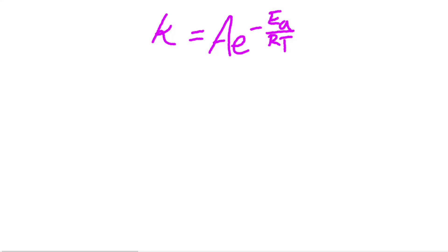The Arrhenius equation in IB higher-level chemistry can be a difficult one to understand intuitively. It's at the center of IB higher-level chemistry's topic 16.2 about activation energy, because it allows us to make quantitative predictions of the effect of temperature on the rate of reaction, as far as collisions having enough energy to react is concerned.